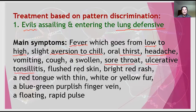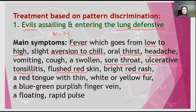Then we can see some red skin and red skin rashes. Generally speaking, it may start from an exterior wind-heat pattern and then become a little bit more severe, causing more symptoms. The tongue coating may be white or yellow, and the pulse is floating and rapid.